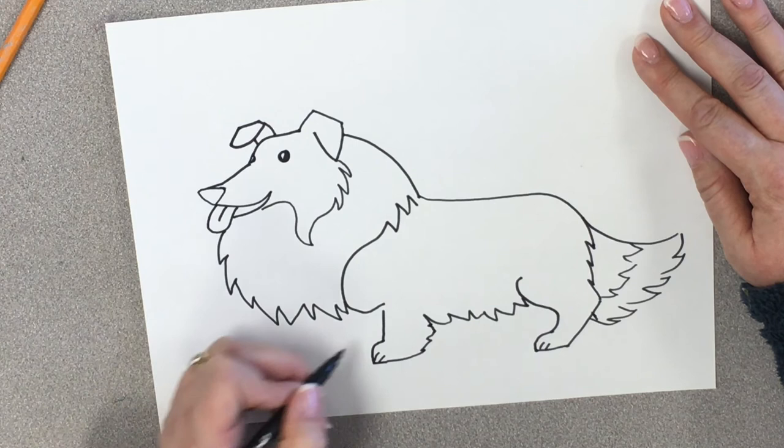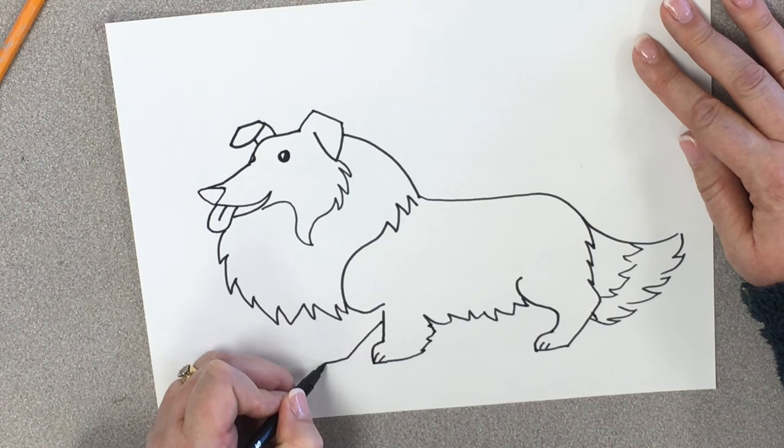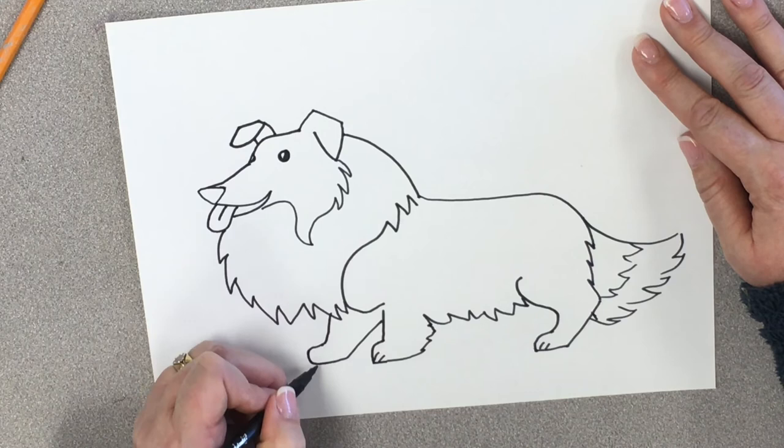All right. Then we're going to draw the paw that's in the front behind it. Come in diagonal. Flatten it out. Come back around. Come up. And there's his little paws.